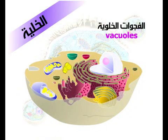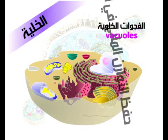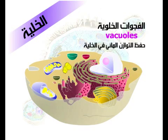الفجوات الخلوية. هي تجاويف محاطة بأغشية، ولا يمكن مشاهدتها بكثرة في الخلايا الحيوانية كما في الخلايا النباتية، تعمل على حفظ التوازن المائي في الخلية.